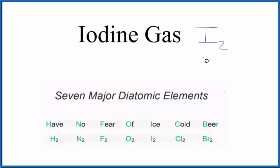So this is what we call a diatomic element, and there are seven major diatomic elements. Iodine, that's one of them.